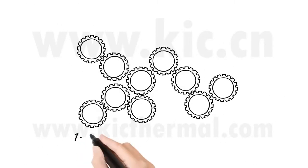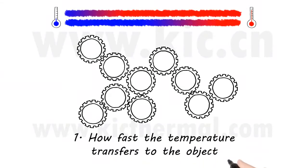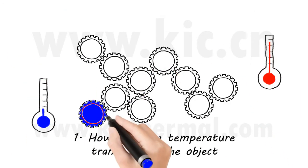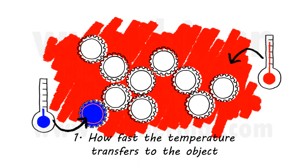1. How fast the temperature transfers to the object. This depends on several factors, for example the temperature difference between the object and the environment in which it sits.